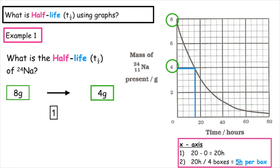We can see on the x-axis, it's three boxes along. Three times five equals 15. So the half-life for sodium-24 is 15 hours.